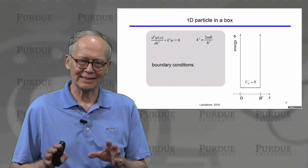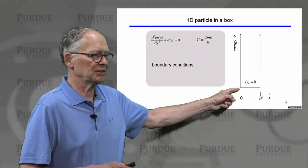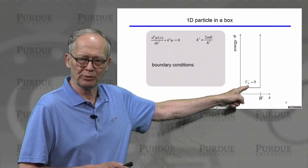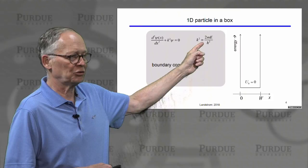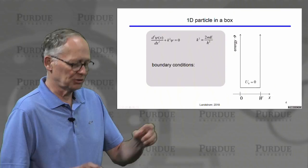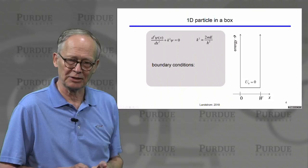Let's look at a classic quantum mechanics problem - the particle in a box. This box goes from zero to some width L. The potential energy is zero inside the box, but it has infinite barriers and an electron cannot get outside. We'll solve our time-independent wave equation; k squared is given by a relation because U is zero inside the box. We need to solve this equation and then apply the boundary conditions - those are the two things in solving a second-order differential equation.